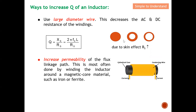Additionally, due to the skin effect at high frequencies, the wire resistance Rs increases. However, with a larger diameter wire, this increase in Rs is constrained. So at high frequencies, a larger diameter wire helps limit the rise in Rs. Therefore, you can conclude that using a larger diameter wire increases Q.